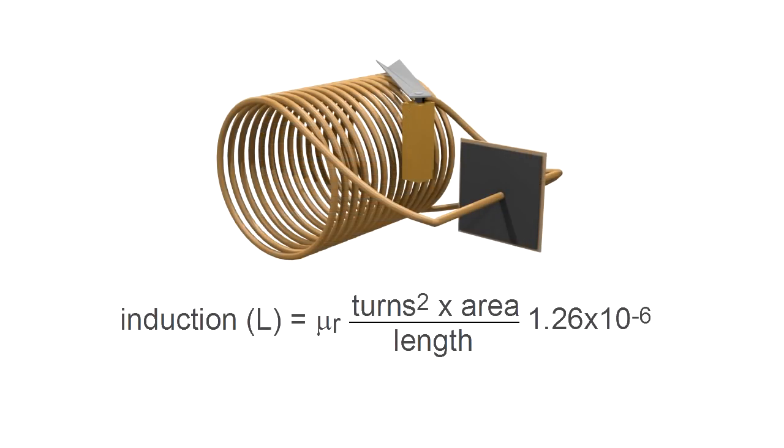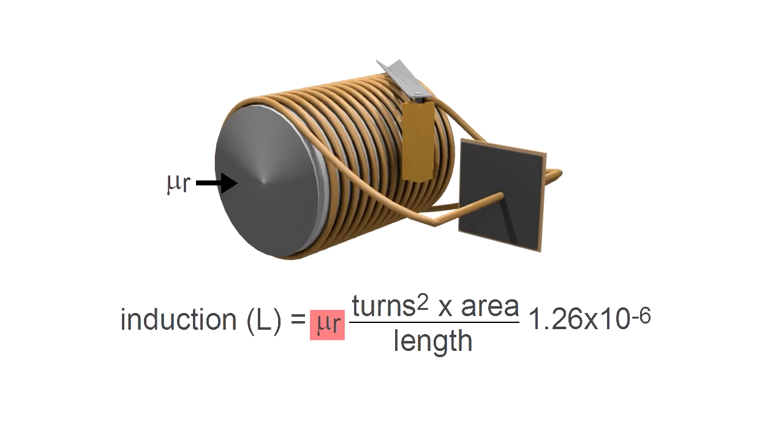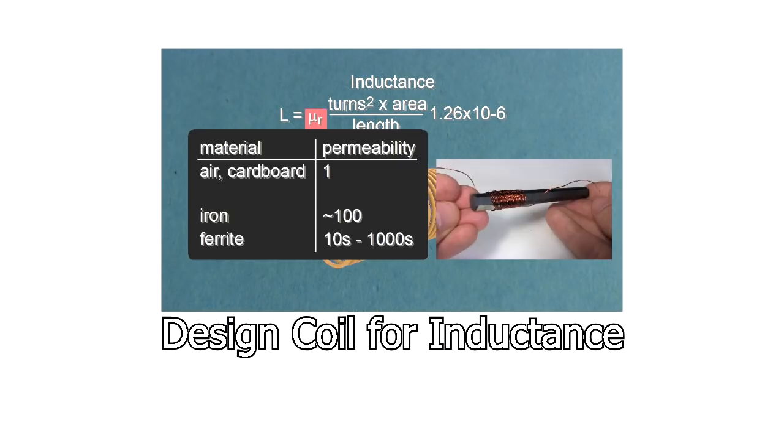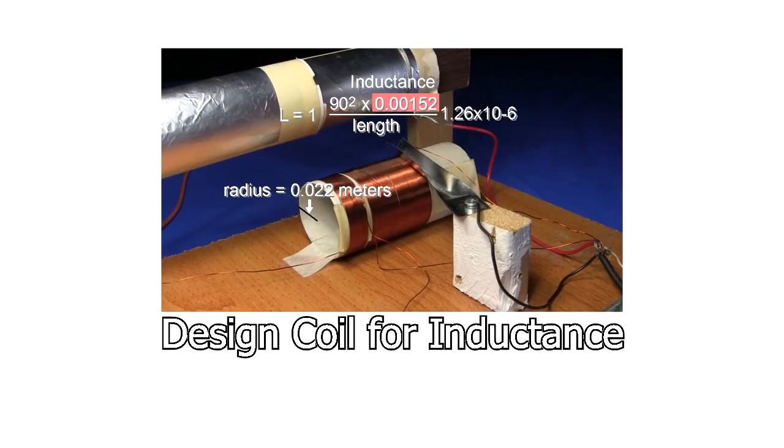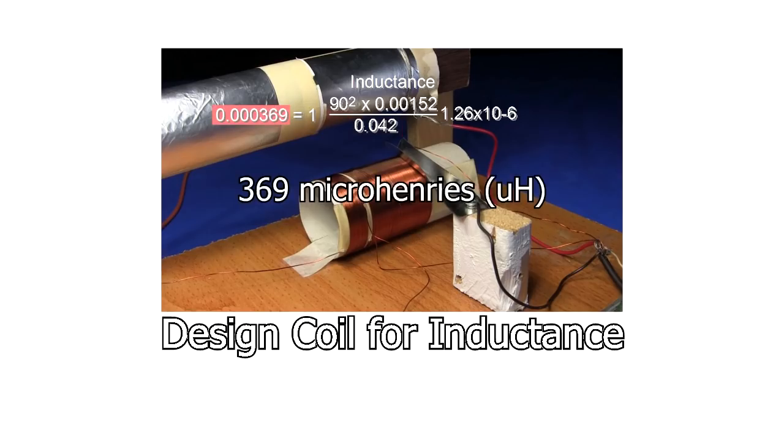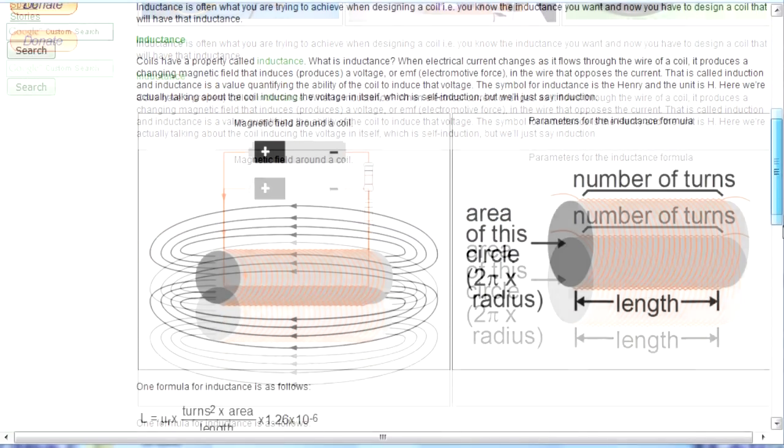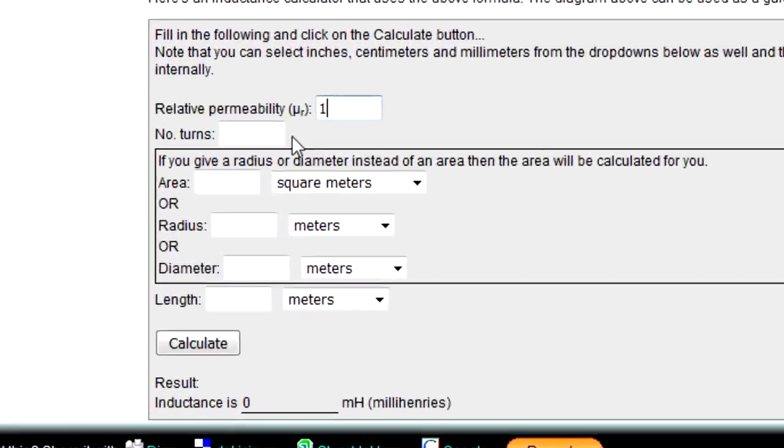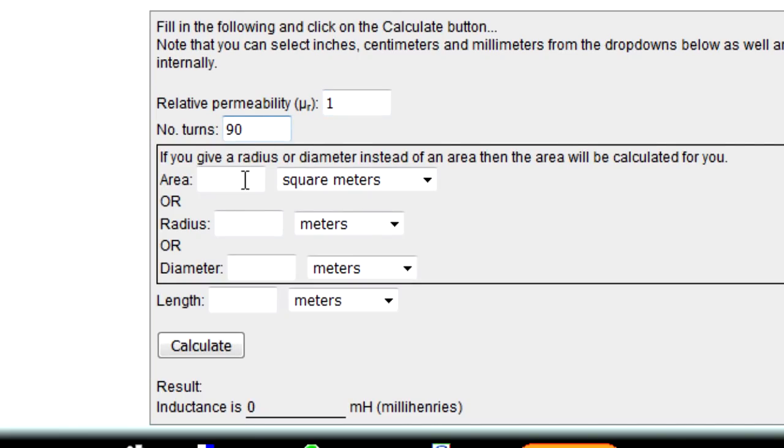This is the formula for the inductance of a coil. Notice it includes things like the number of turns, the cross-sectional area, the length of the coil, and something representing the material the wires are wrapped around. I have a video all about designing coils for specific inductances, and I'll give a link to it at the end of this video. I also have a calculator on my website for calculating the inductance. Again, all links are also in the video description.